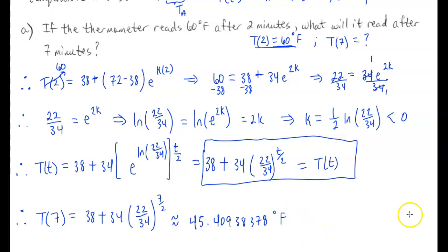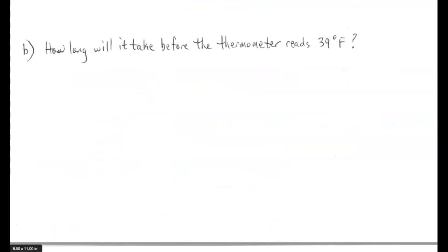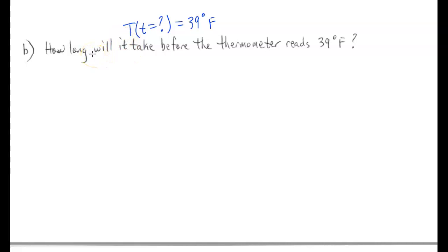For example 2B, we want to know how long it will take before the thermometer reaches 39°F. In other words, find the time t when T(t) = 39. We set our equation equal to 39 and solve for t.